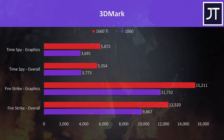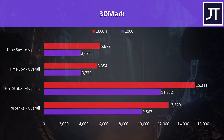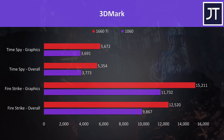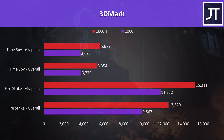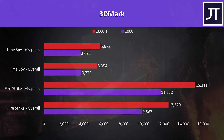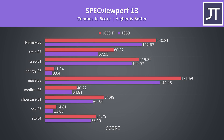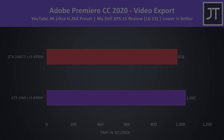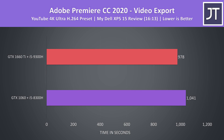3DMark Time Spy and Firestrike results show the 1660 Ti ahead in all cases, with a 30% higher Firestrike graphics score and 54% higher Time Spy graphics score. SpecviewPerf 13, a benchmark for professional application graphics performance, also showed the 1660 Ti ahead in all instances, though scores varied depending on the specific test. In Adobe Premiere, exporting a laptop review video with QuickSync, the 1660 Ti laptop was just 6% faster — not as significant a gain compared to games.